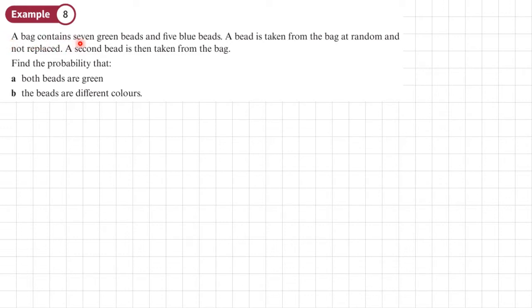Example 8. A bag contains seven green beads and five blue beads. So I'll just underline that. A bead is taken from the bag at random and not replaced. OK, that's important. It's not put back.